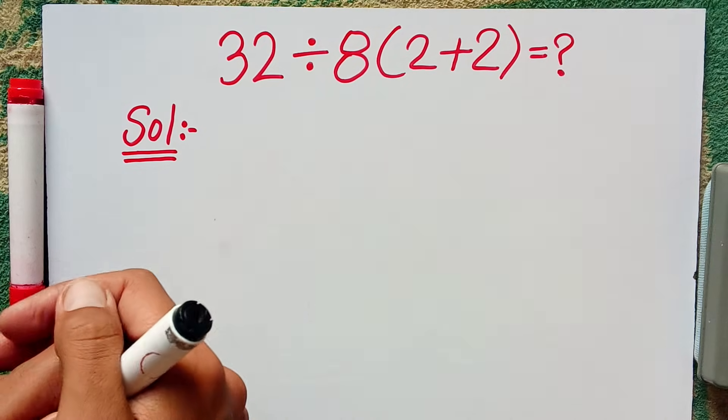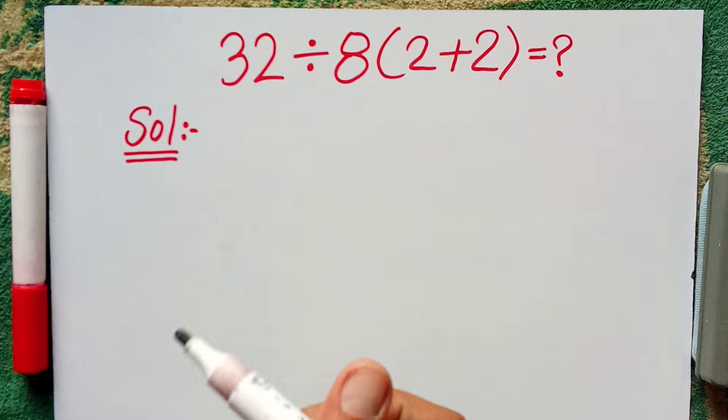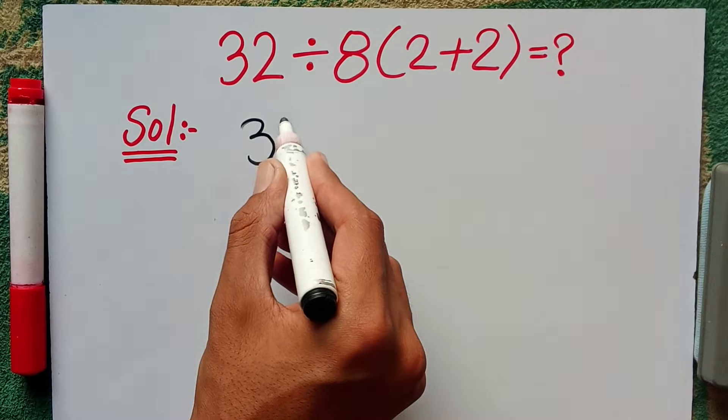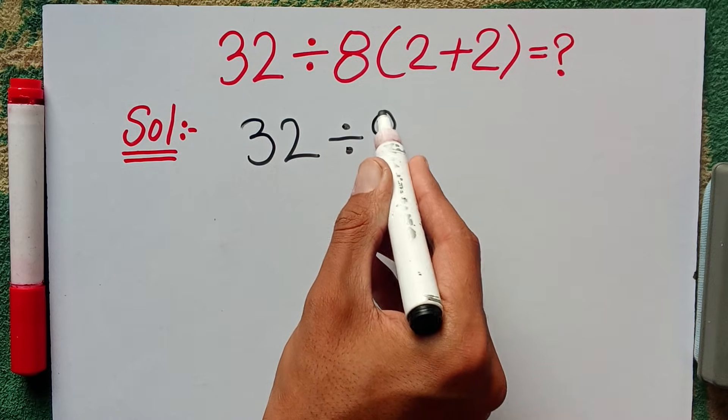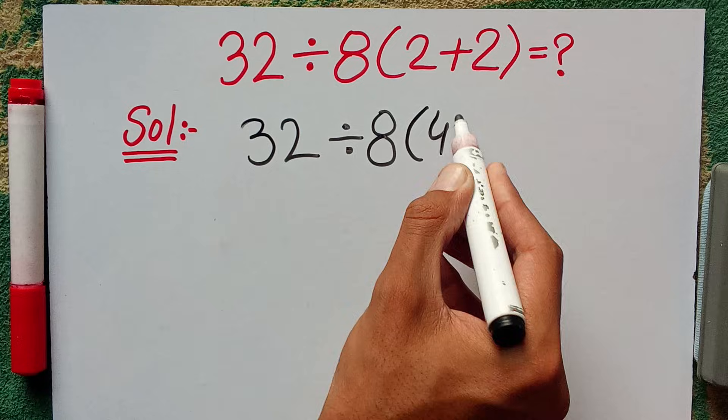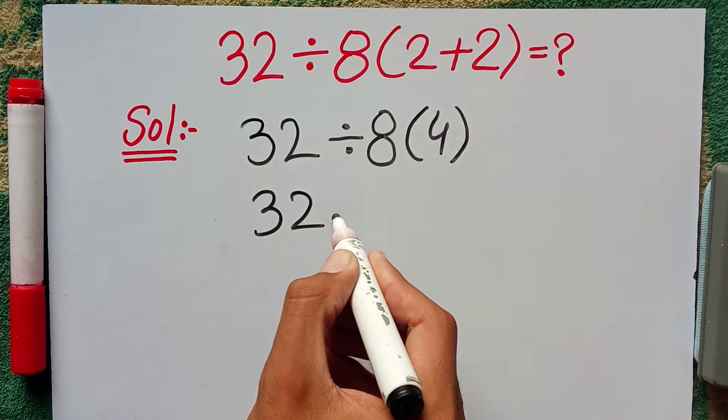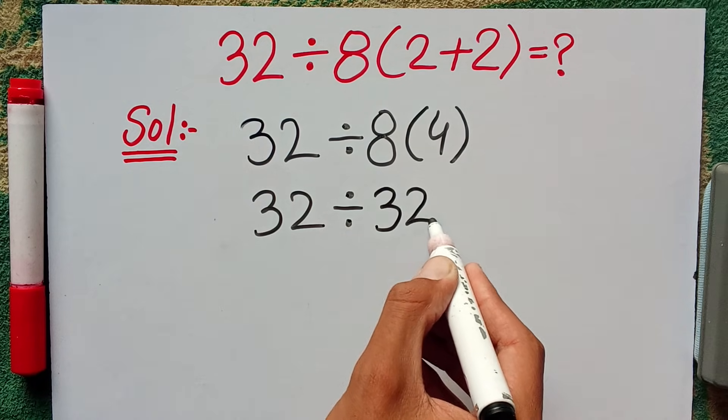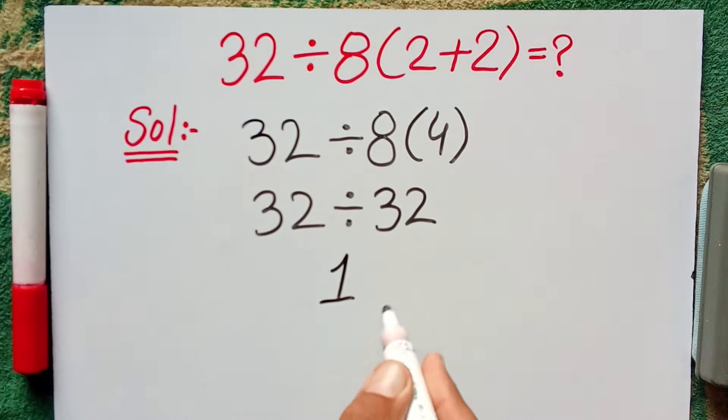Because mostly people can solve this question by wrong method, they can solve this question as 32 divided by 8, 2 plus 2 equals 4. Now in next step, 32 divided by 8 times 4 equals 32. 32 divided by 32 equals 1.